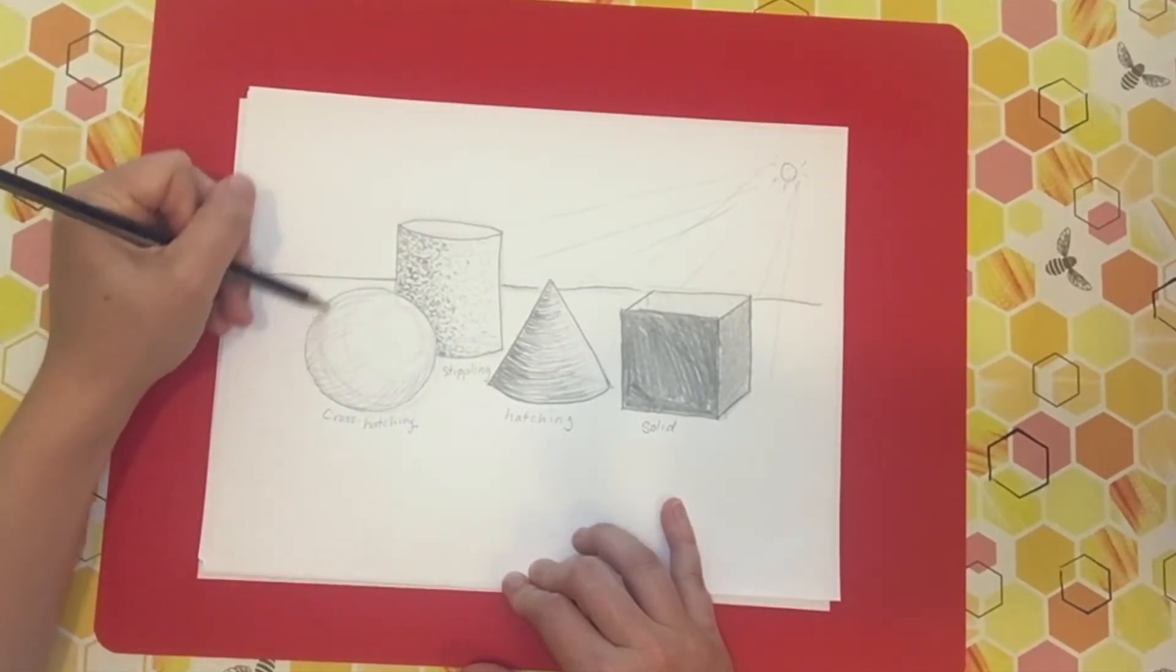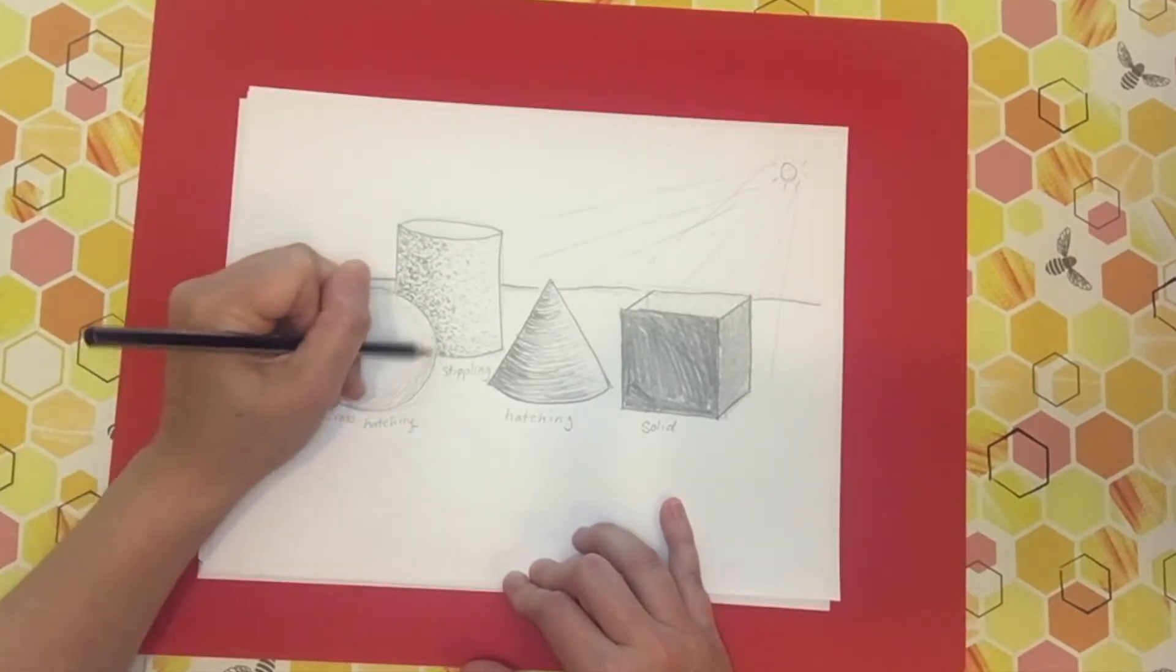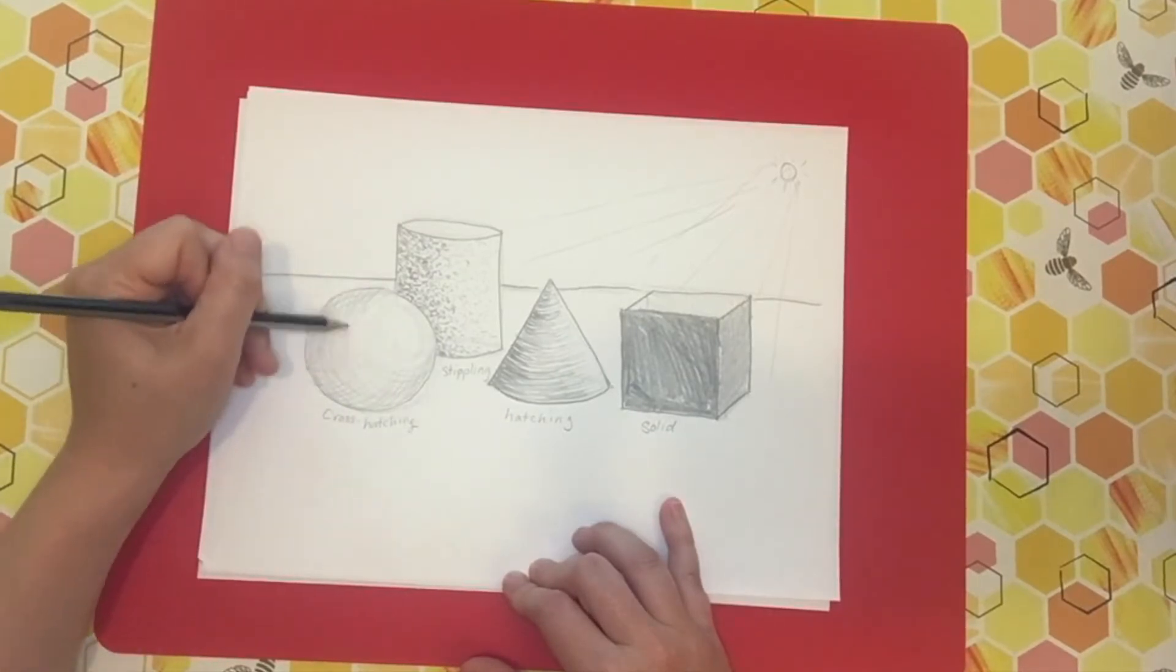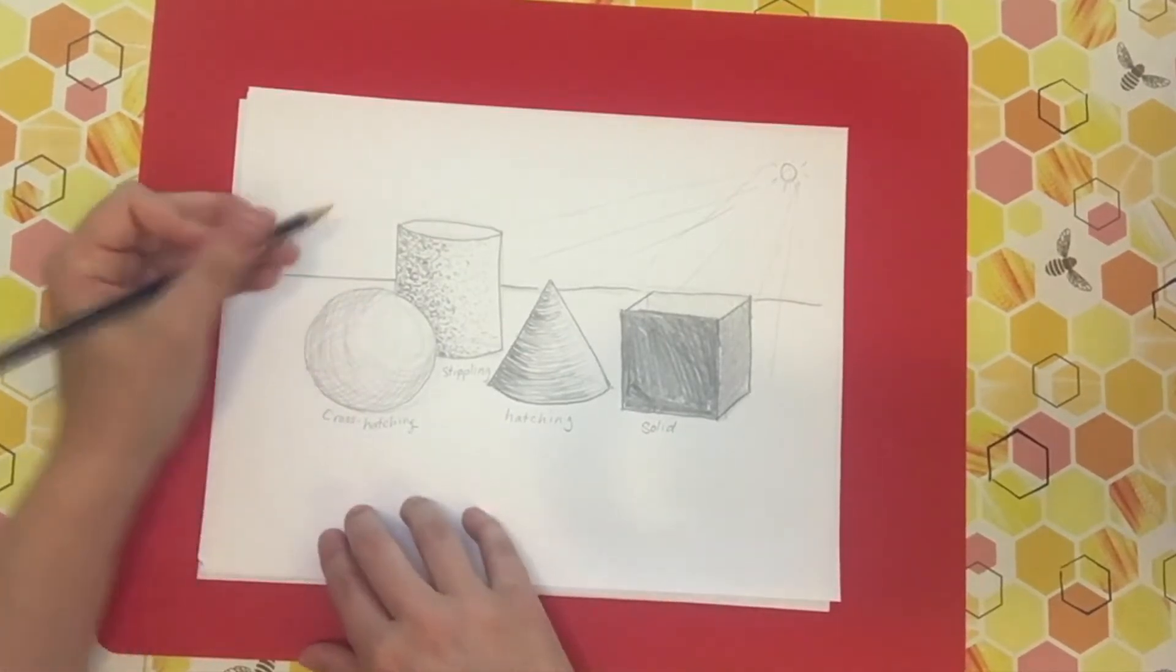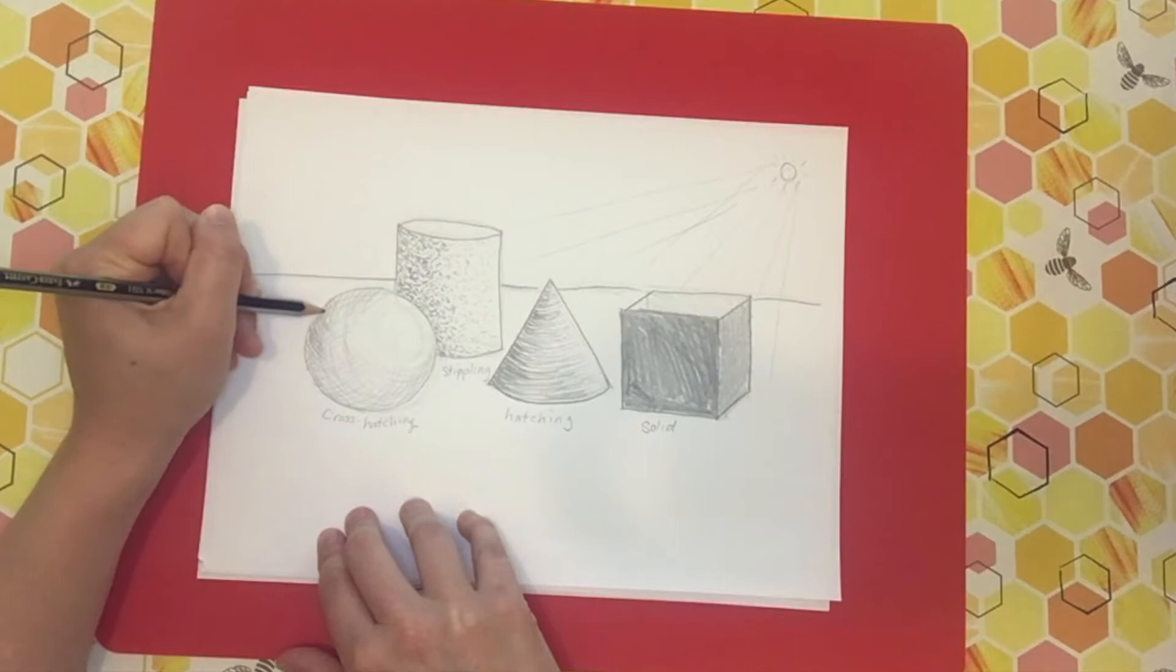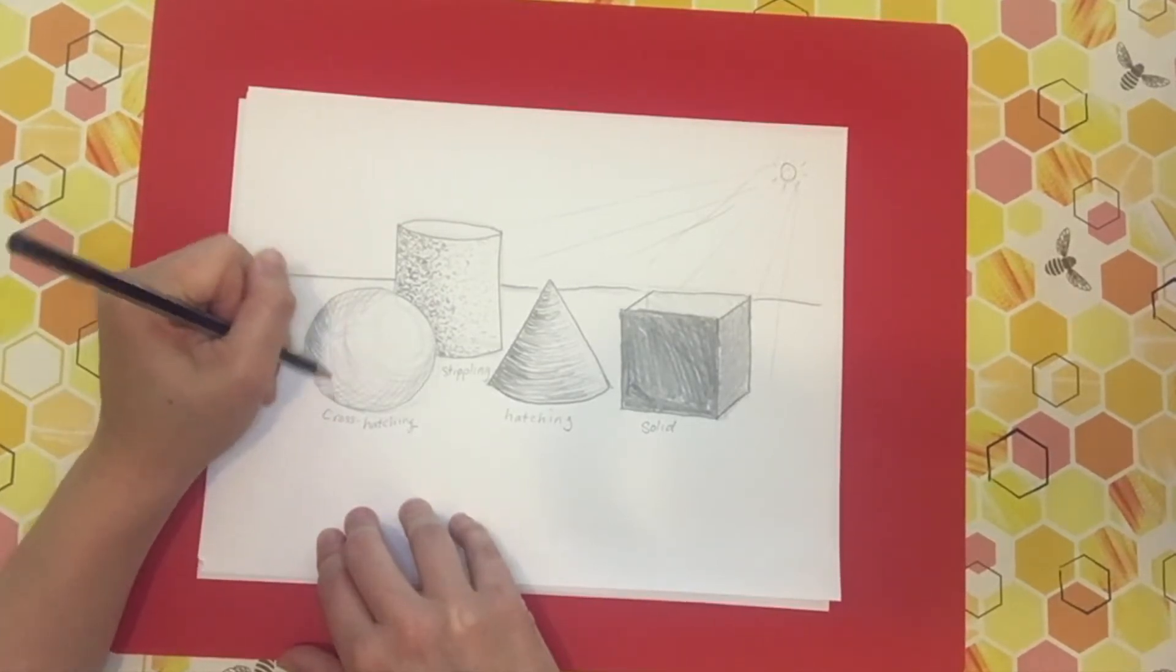Next, I'm going to start to create these curving, hugging lines in another direction. Because it's round, my lines will also be rounding. And to make this even darker, I would go around in another angle and layer again where I want my shadows to be darkest.